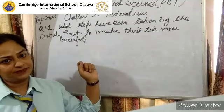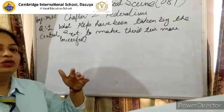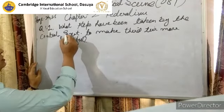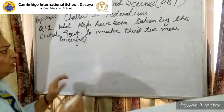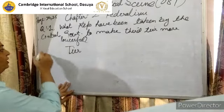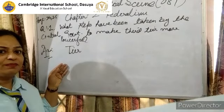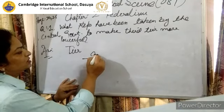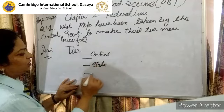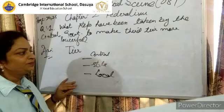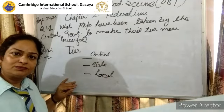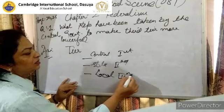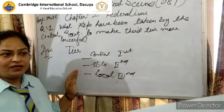Today I am going to teach you Chapter 2, Federalism, Civics. We are doing three to four questions in this video. My first question will be: what steps have been taken by the central government to make the third tier more powerful? There are three tiers in our Indian government. The first one is central, then state, and the third one is local government. These three levels are important for the good functioning of India.